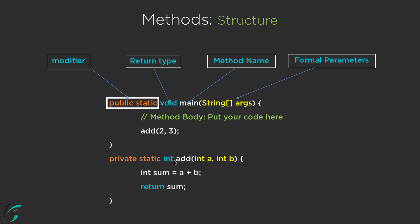So the return statement simply returns the integer sum value — that is why in the return type we have int here. If we return a float value then it will be float here. If we return a string value then we have to define string here. So this statement simply returns the sum of 2 and 3, and then inside the main function we can utilize this sum variable and print it out.